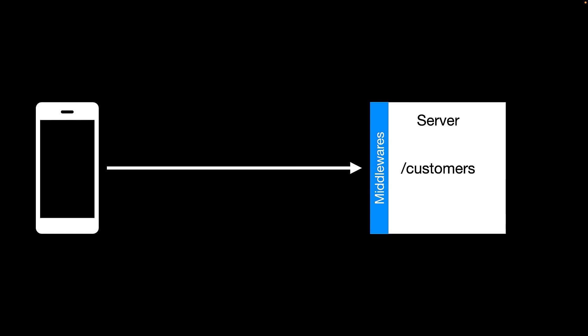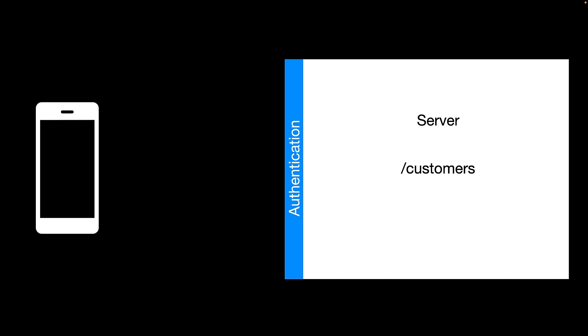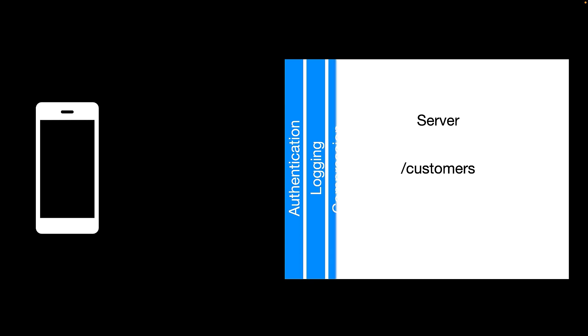One example of middleware is an authentication middleware. In order to go to the customers route, the authentication middleware logic will get executed and check if the user is authenticated or not. You can also create a logging middleware, a compression middleware, and so on — an array of different middlewares that trigger whatever logic is defined in them. Now let's go ahead and create a simple middleware in Vapor.